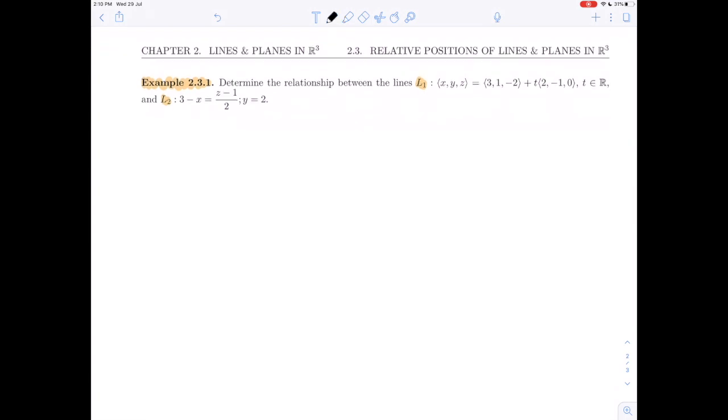L1 is given in vector form. So we can see the position vector of a point p1, which is 3, 1, minus 2. We can also read the direction vector of this line directly as it's given. So 2, minus 1, 0.